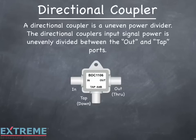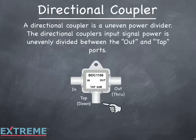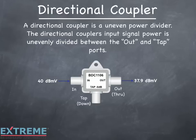A directional coupler is an uneven power divider. The directional coupler's input signal is unevenly divided between the out and tap ports. Directional couplers have an input port, an out or through port, and a tap or down port. In this example, we're showing a BDC1106, a directional coupler that loses 6 dB on the tap port. Here we're feeding the input with 40 dBmV. The signal flows from the input to the output port — the insertion loss path — with 2.1 dB of insertion loss for an output of 37.9 dBmV. From the input to the tap or down port, the coupler loses whatever its value is: in this case, 6 dB for an output of 34 dBmV.